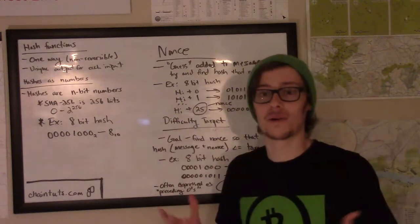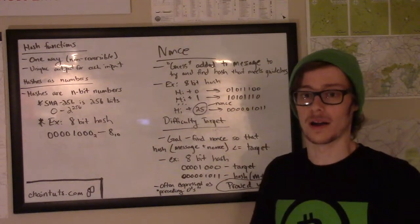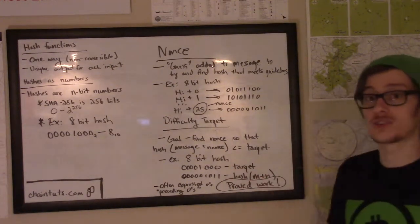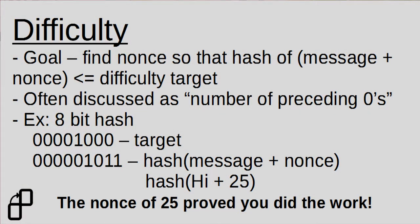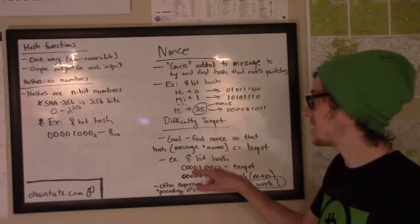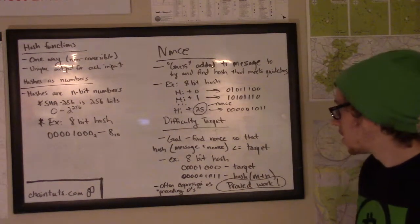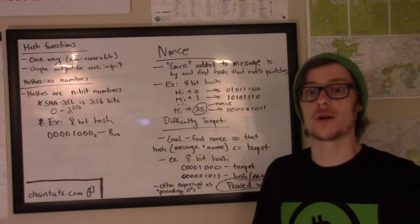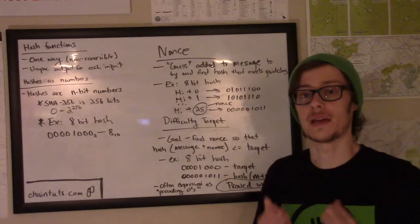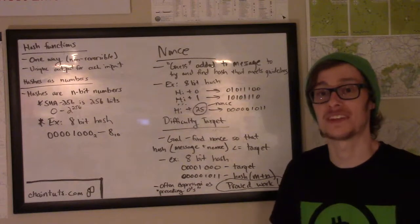What's this number that's less than 8? This is called our difficulty target. The goal with a difficulty target is to find a nonce so that the hash output represented as a binary number is less than or equal to this difficulty target. For example, if we have an 8-bit hash and our target is 8, we're looking for a hash output where the message plus the nonce guess equals some number represented in binary that is less than 8, that difficulty target. We often express this when talking about proof-of-work as how many preceding zeros do we see on our number that is the hash output from doing the proof-of-work with the nonce.